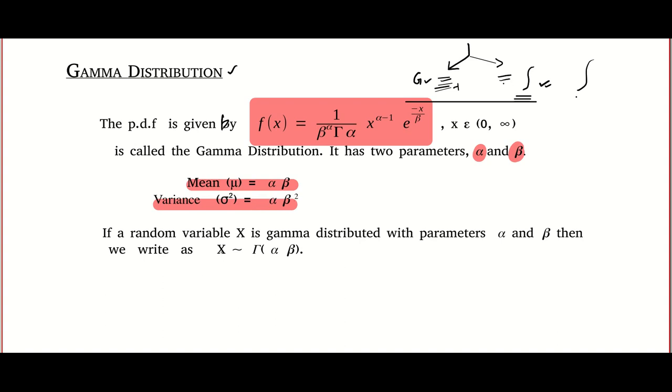And similarly, in normal distribution, I hope you remember, normal distribution depends on mu and sigma. Mu stands for the mean and sigma stands for the standard deviation. Similarly, this alpha and beta will decide the shape of the gamma function.